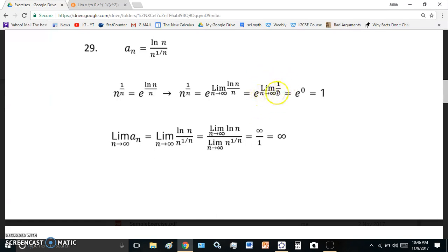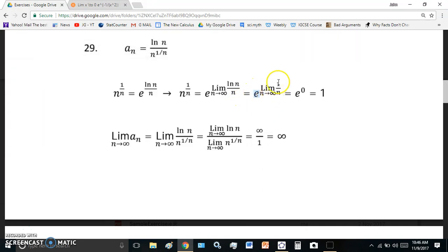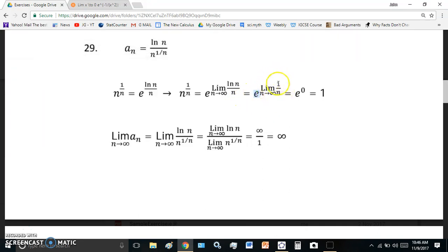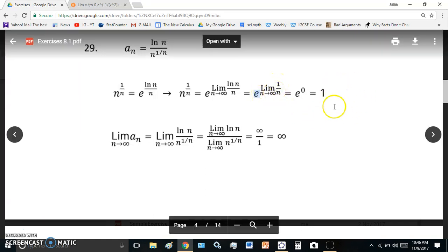We can't have an infinity limit here and then say e to the infinity, to the minus infinity, is equal to 0. So what they're saying is that this here evaluates to minus infinity, which means there's no limit. And then e to the minus infinity is 0. That's obviously rubbish.